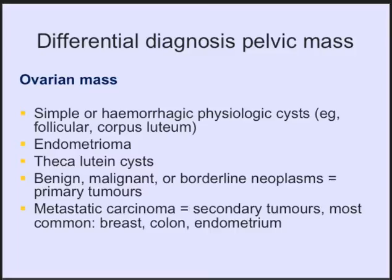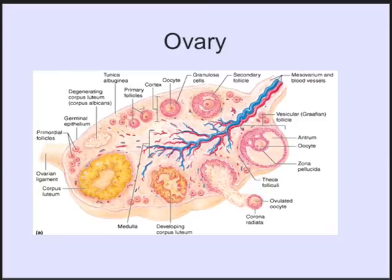Most common metastases are from the breast, the colon and the endometrium. A diagram of the ovary is good to remind us of its physiological function. The functional unit of the ovary is the follicle, which produces estradiol and eventually produces an egg once a month in a regular cycle. I refer you to my separate video about the female hormonal cycle.